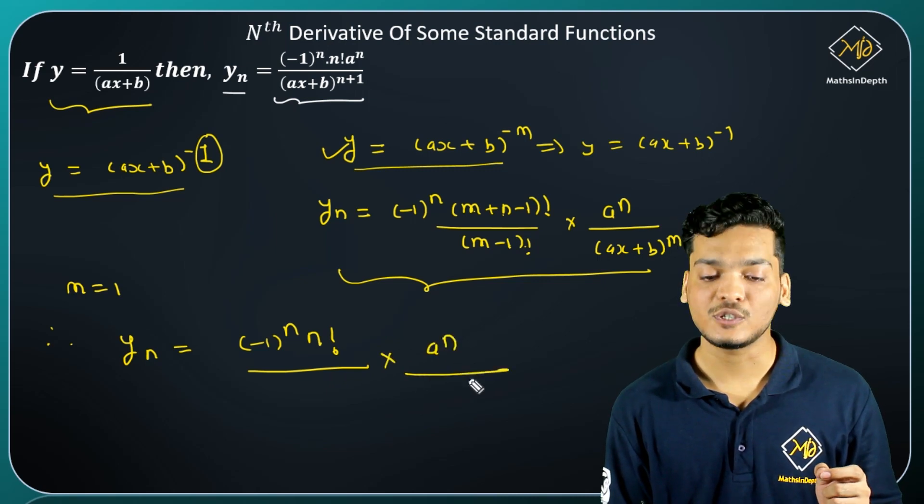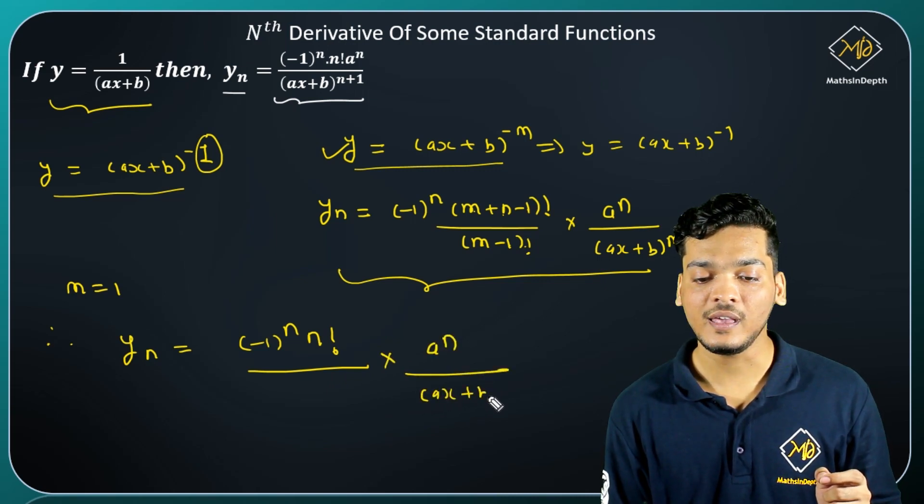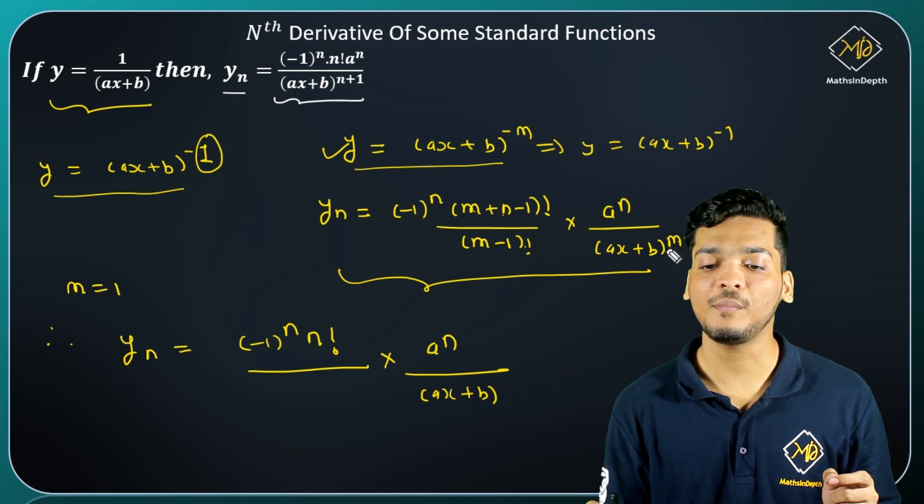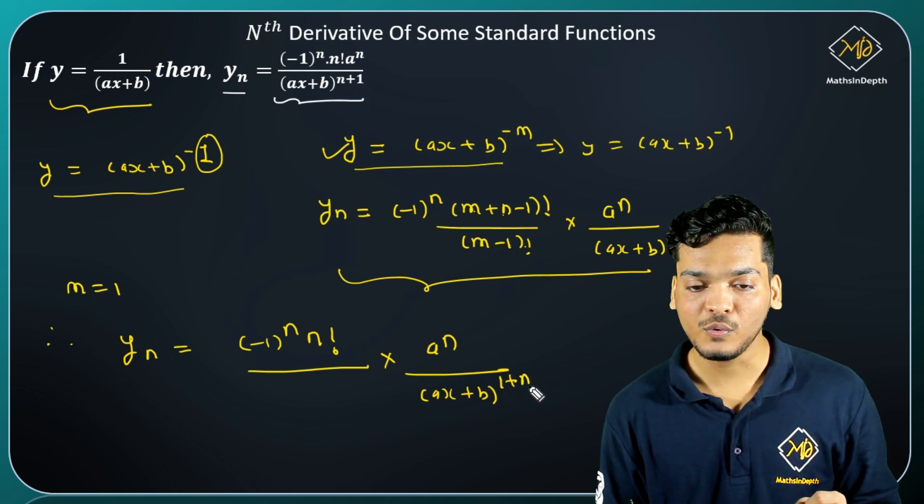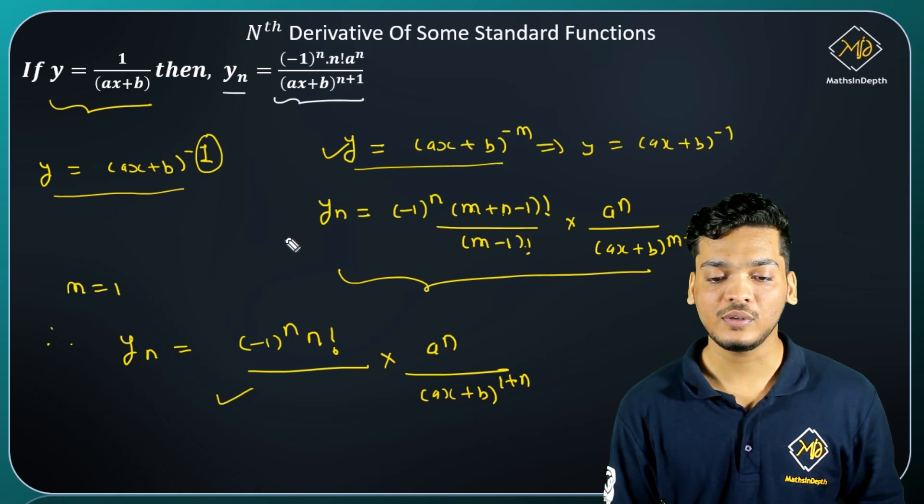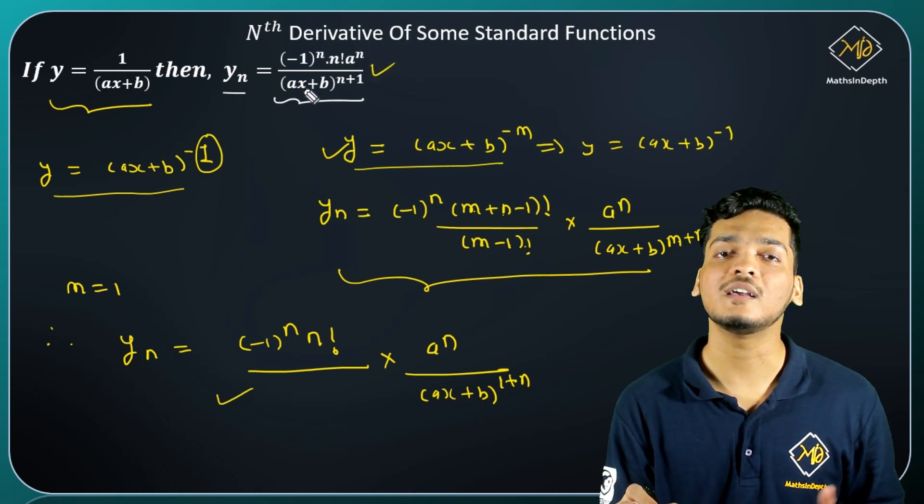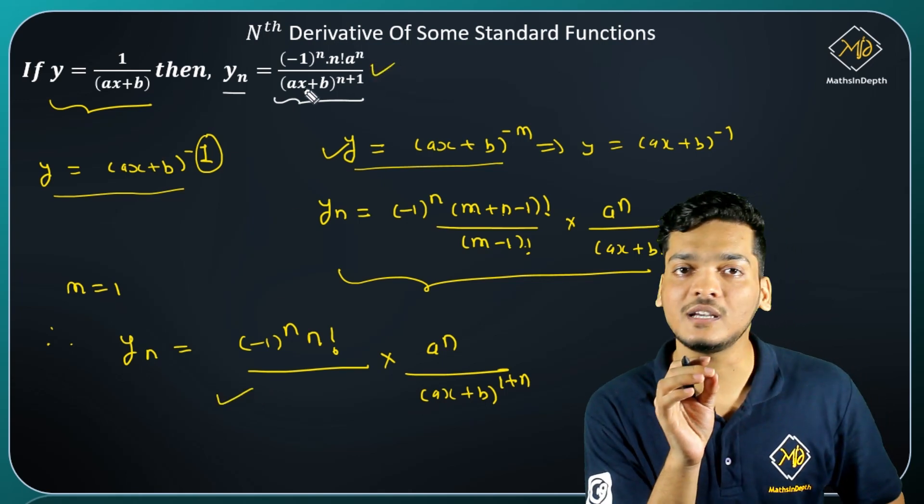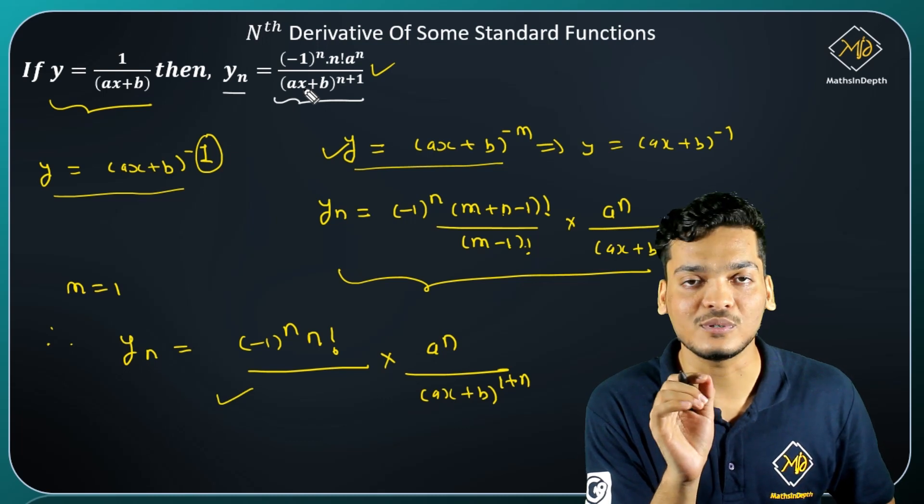Then a raised to n divided by (ax+b) raised to 1 plus n. Now substitute m value 1 to get 1 plus n. If you see this formula, this formula is exactly the formula. So you can directly use this formula.